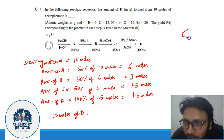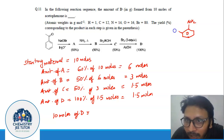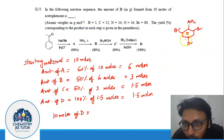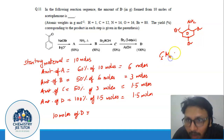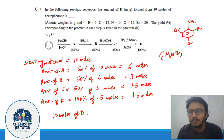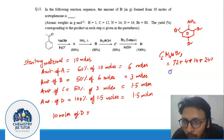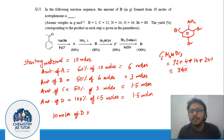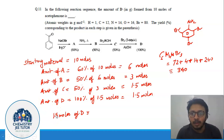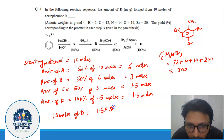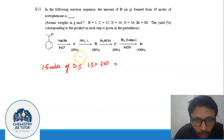We need to calculate the amount of D in grams. D is the tribrominated aniline. Let us calculate its molecular weight: we have C₆H₄, one nitrogen, and Br₃. That is 72 (carbons) + 4 (hydrogens) + 14 (nitrogen) + 240 (three bromines at 80 each), which comes to around 330. That is the molecular weight of D. We have 1.5 moles of D.